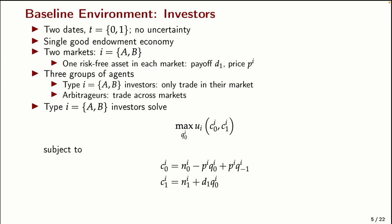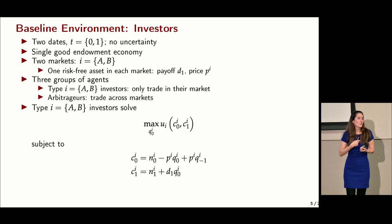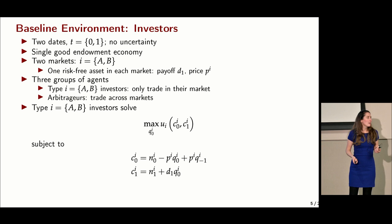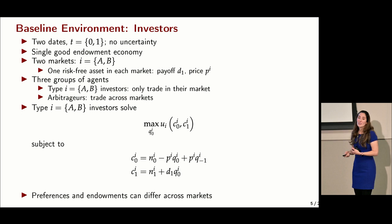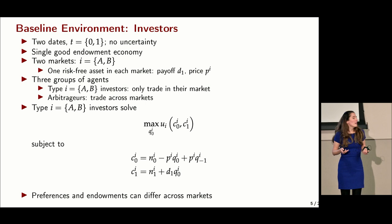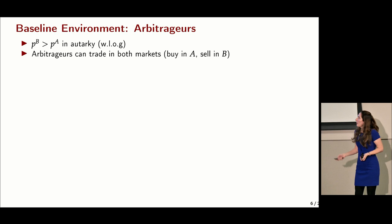Each type-I investor solves a consumption-saving problem, maximizing utility U_I depending on consumption at date zero and date one, by choosing the quantity of the risk-free asset they buy. The constraints are just budget constraints. At date zero, the agent consumes their endowment minus what they pay for the asset. At date one, they get their endowment plus dividends from holdings. We assume something differs across investors — preferences or endowments — so that P_A and P_B differ. Without loss of generality, we assume P_B is greater than P_A.